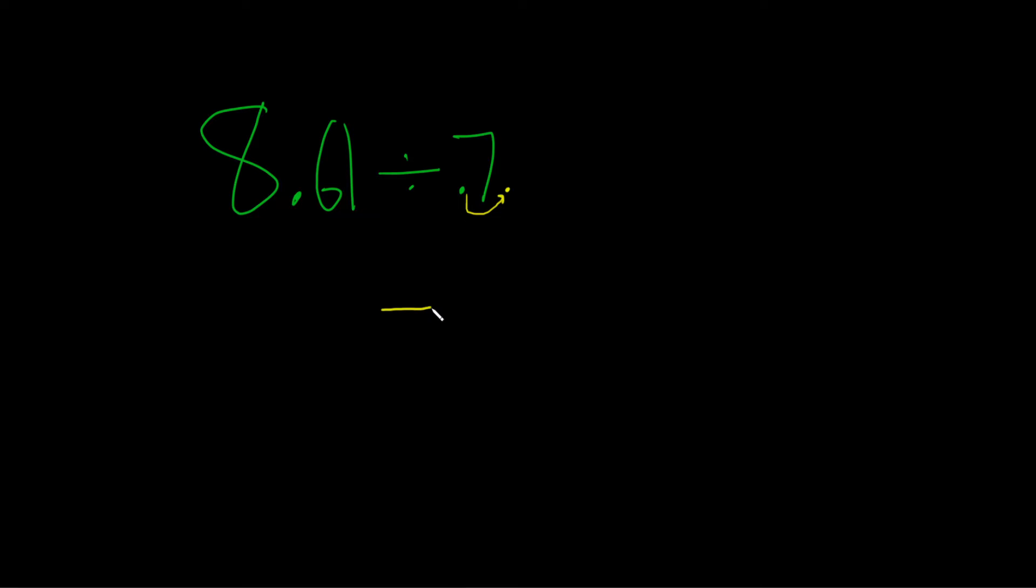So then you write the 7 here, because it's a whole number now. Then you write your division symbol here. This number goes on the inside. However, because we moved it over one place, we have to move it over one place here as well. This becomes 86.1.